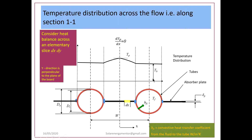This shows the temperature distribution over the plate and tube assembly. At the center of the plate the temperature is maximum, and at the center there is no temperature gradient — that is, dT_p/dx equals zero.